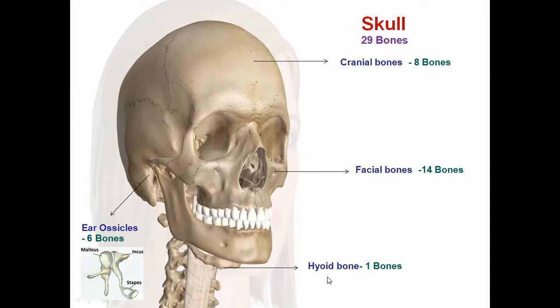The hyoid bone is present at the bottom of the skull, in the neck region. It is a horseshoe-shaped bone and it supports the tongue.